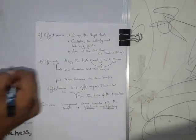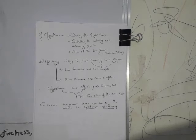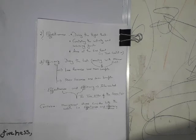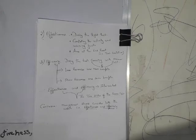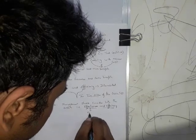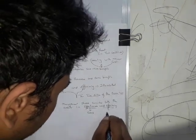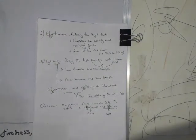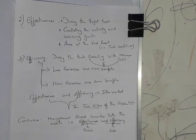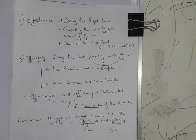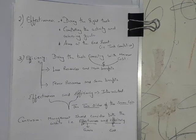That is, effectiveness and efficiency. If both the aspects are met, obviously they can maintain the balance between effectiveness and efficiency. Effectiveness in terms of goal and efficiency in terms of cost. So I hope by now you would have understood what is the interdependency or interrelationship that exists between effectiveness and efficiency.